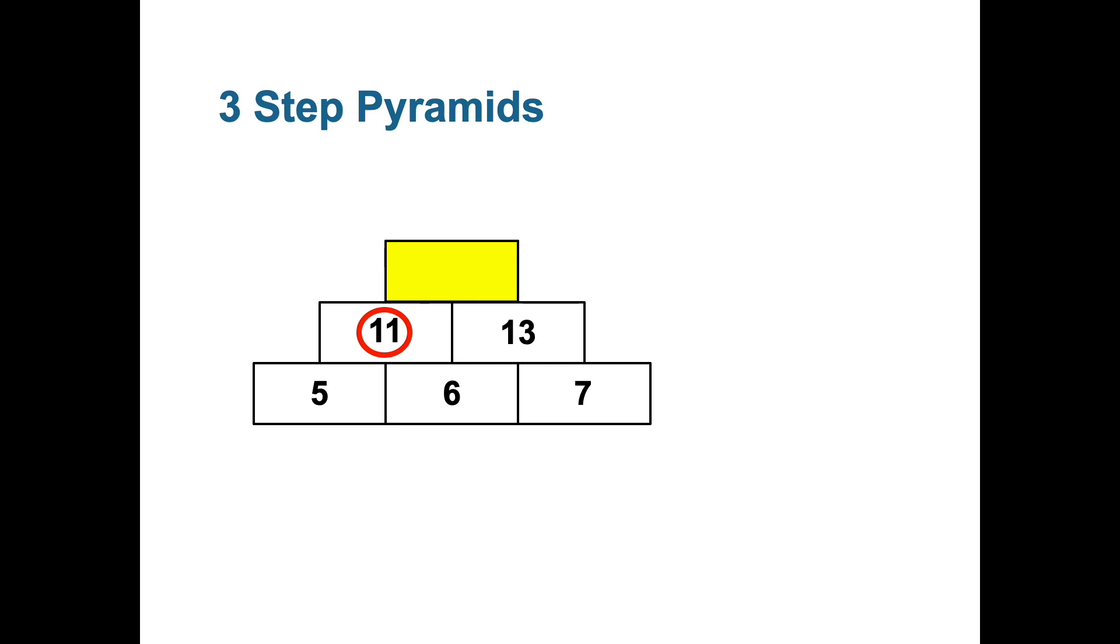Likewise now we're moving to find out the final answer on the top. 11 and 13 are the two numbers that add up to give us the final answer. So 11 plus 13 is 24 and in this case the final answer for this three-step pyramid is 24.